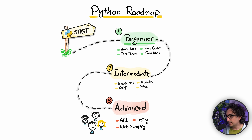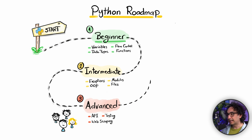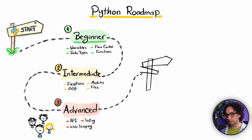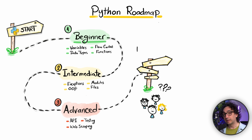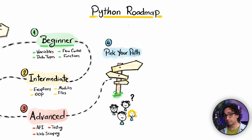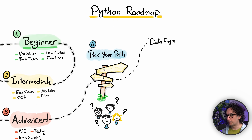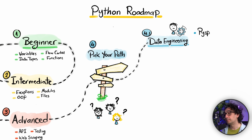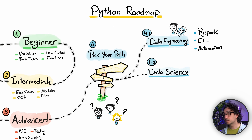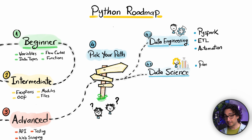After mastering the core, you cannot learn everything — so you have to choose a path that matches your interests and career goals. One option is data engineering: if you enjoy working with pipelines, automations, and moving data around, you'll learn tools like PySpark and ETL processes. Another path is data science: if you enjoy working with data, charts, and insights, you'll work with libraries like Pandas, NumPy, and Plotly to analyze and visualize data.